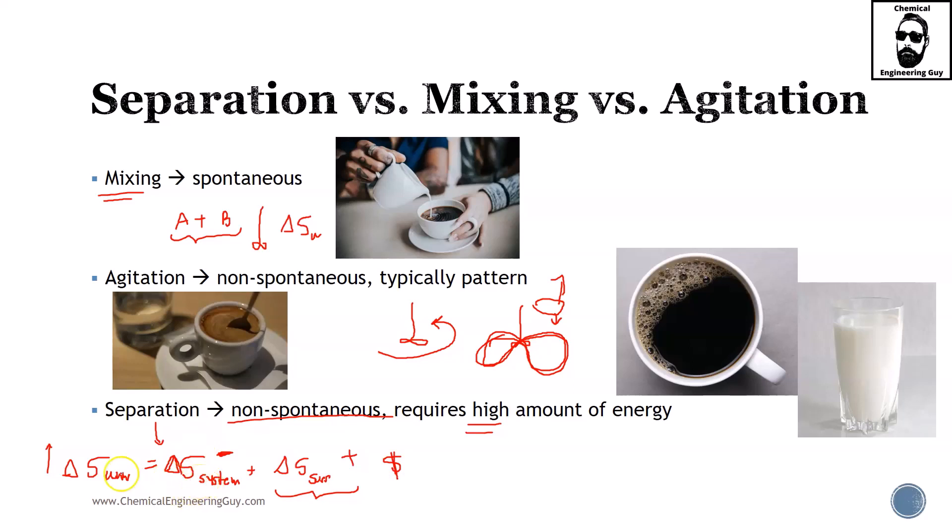So we know that by definition, every separation process will be negative in entropy because we are ordering a system. We have A and B chaotic, very chaotic, mixed, and separating A and B—this is of course a decrease in entropy in the system.